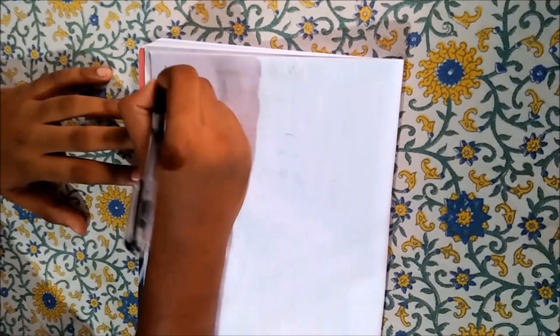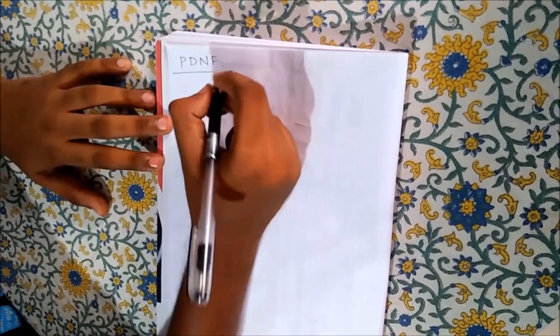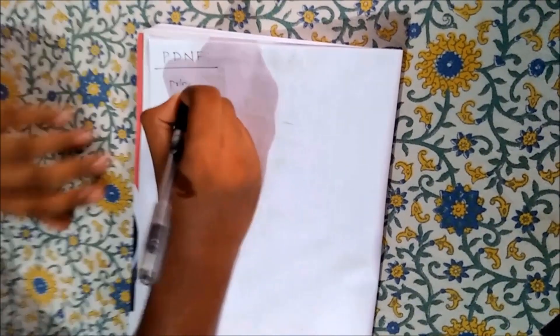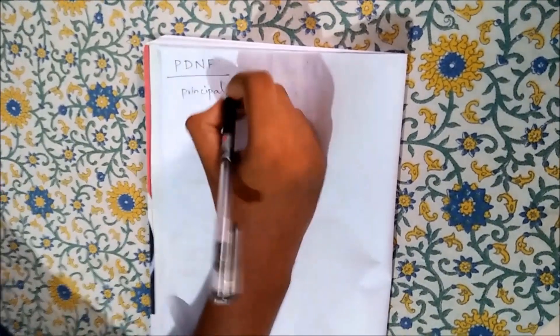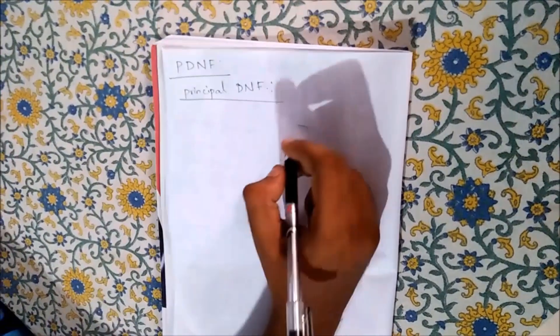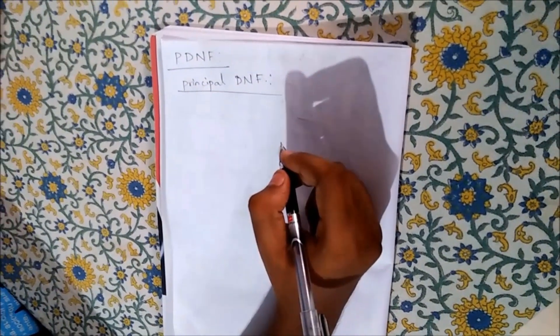Now we will discuss about PDNF which is nothing but principal disjunctive normal form. Before discussing these normal forms, we have to learn some formulas.